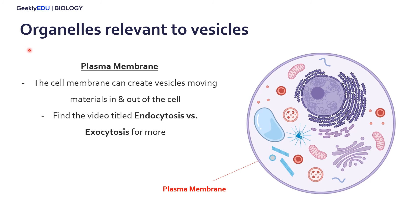The third really important part of the cell for vesicles is the plasma membrane itself. Once the proteins or enzymes created in the ER and modified in the Golgi apparatus need to leave the cell for further use, the vesicles will bind to the plasma membrane and be excreted in a process called exocytosis.